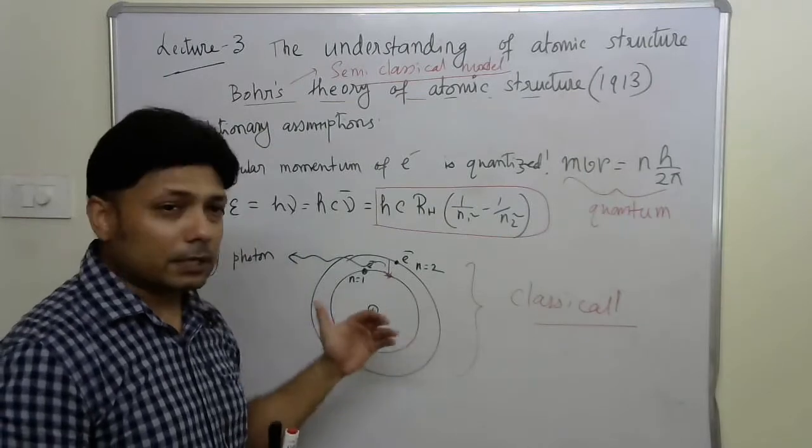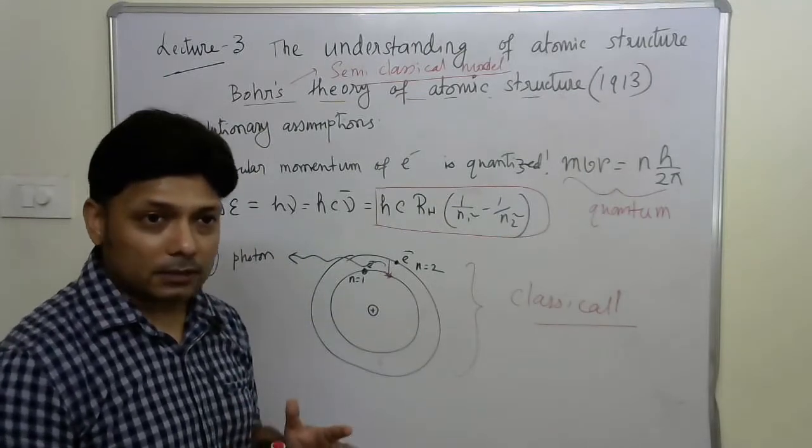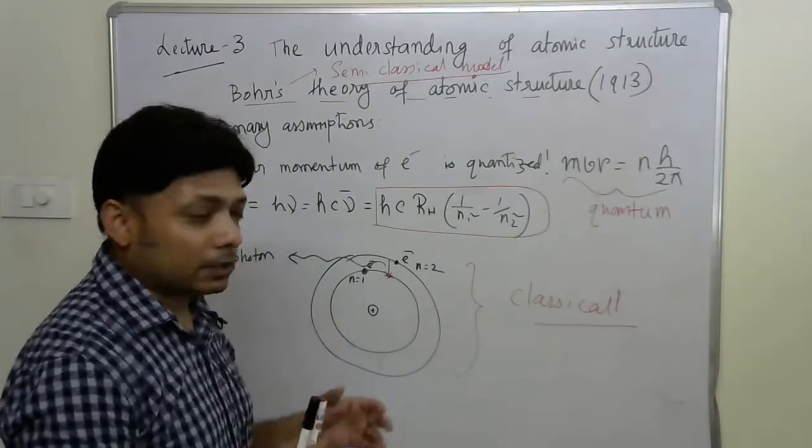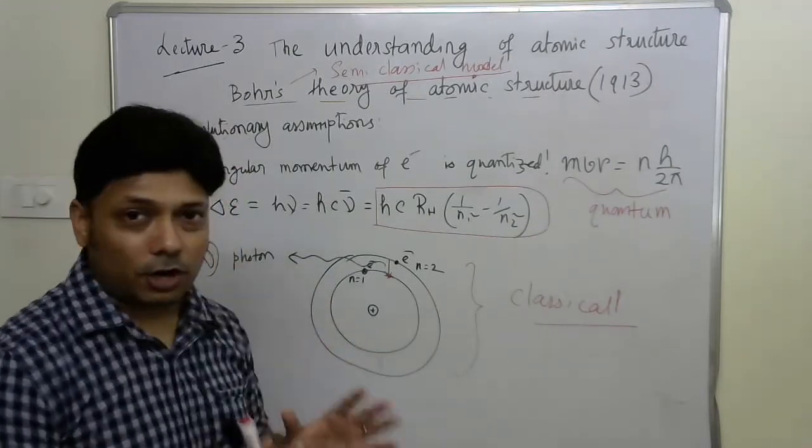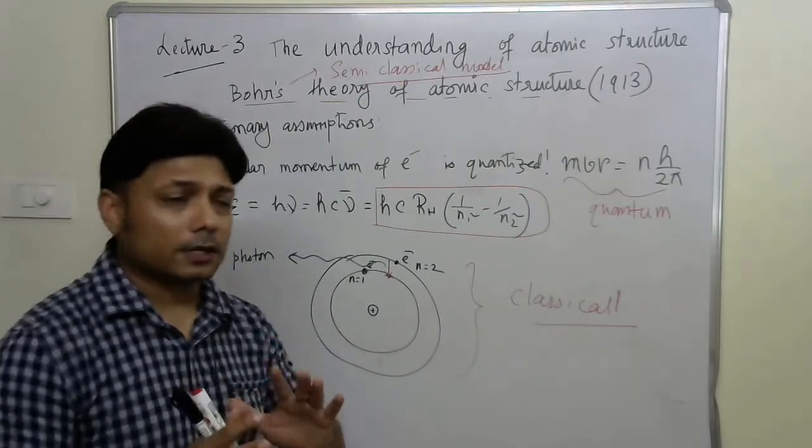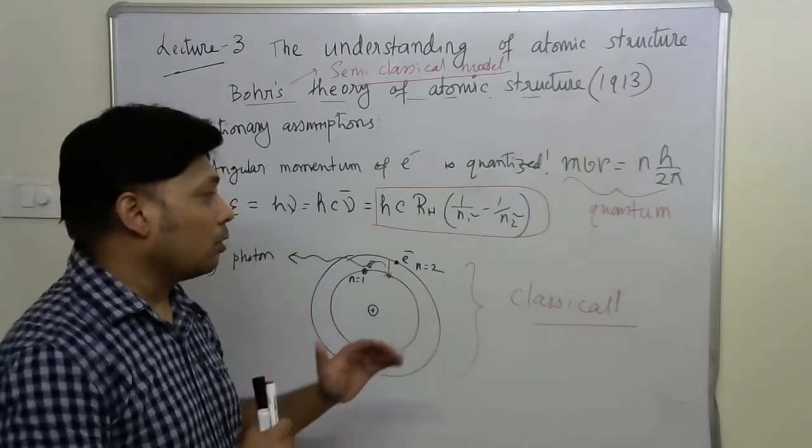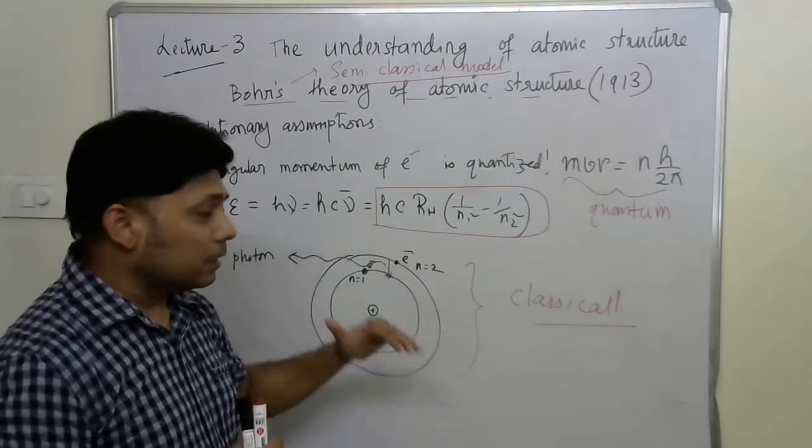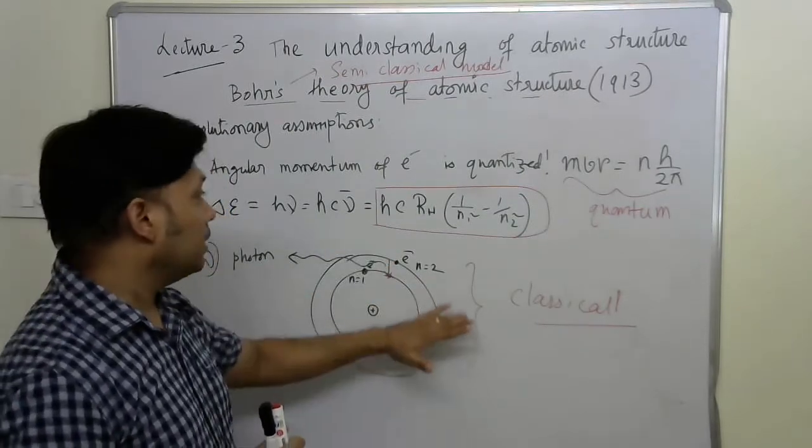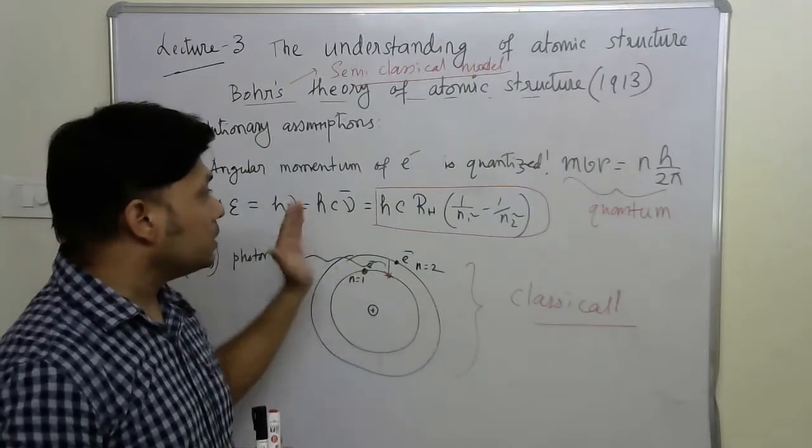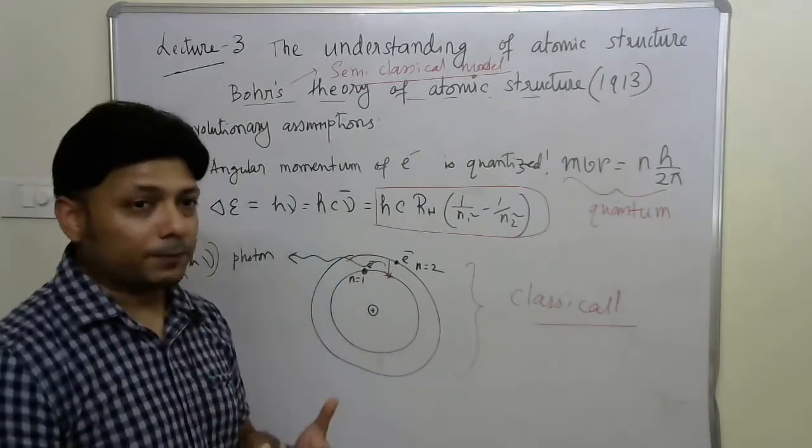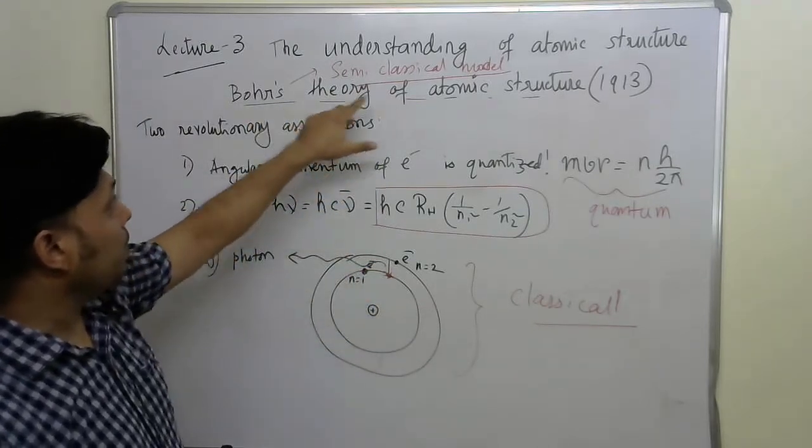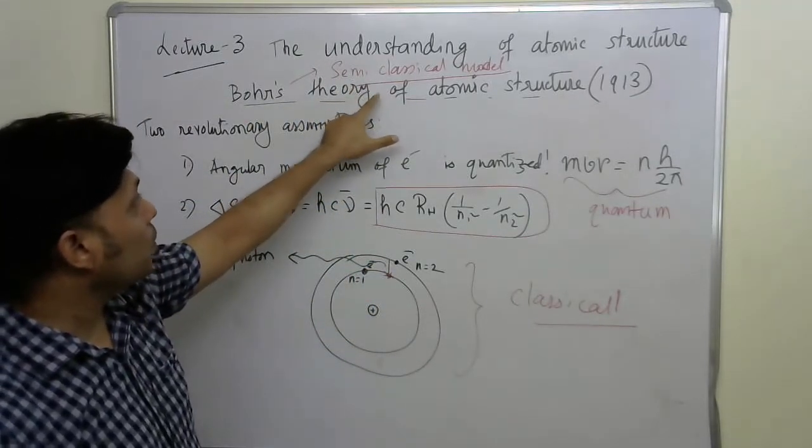But of course, Niels Bohr has several and severe drawbacks, like it cannot explain the Zeeman effect, Stark effect and it cannot explain the finer structure of the light spectra. I guess, we have already studied about those and I am not going into the details. And why those things failed, why Niels Bohr's theory failed to explain those effects, it is because you can guess from here, because Niels Bohr's theory was semi-classical.